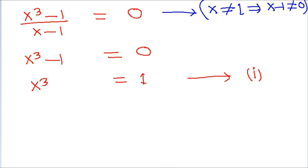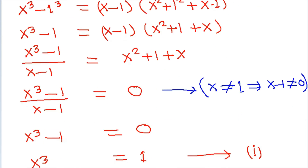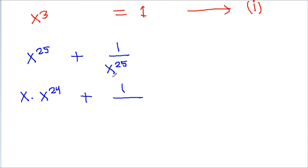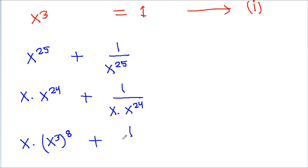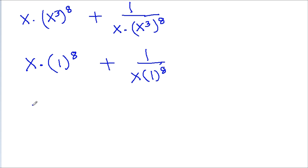Now we find x to the power 25 plus 1 by x to the power 25. We write x to the power 25 as x times x to the power 24, which equals x times x cubed to the power 8. Since x cubed equals 1, this simplifies to x times 1, so x to the power 25 plus 1 by x to the power 25 equals x plus 1 by x, which equals minus 1.